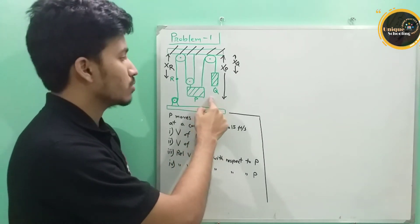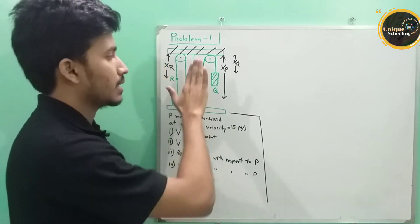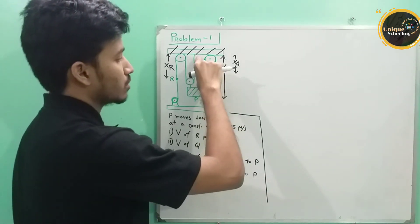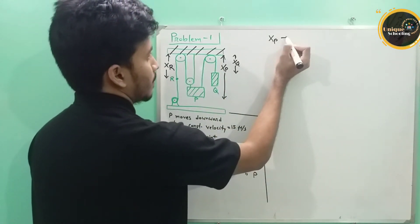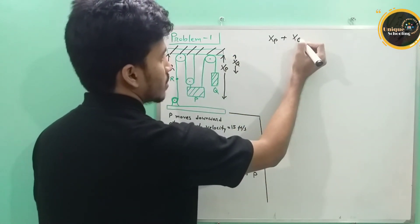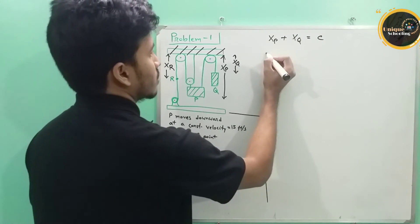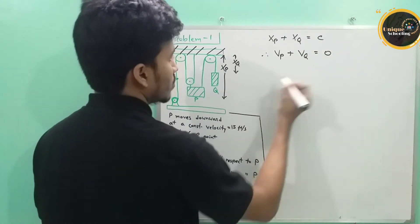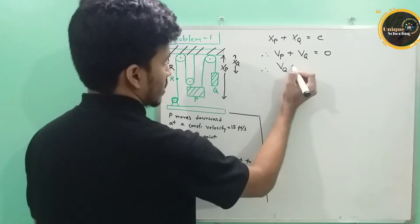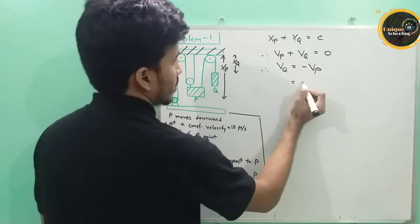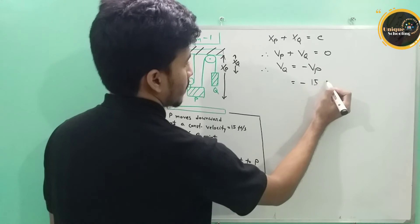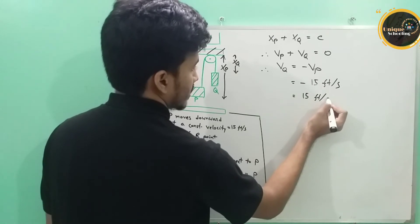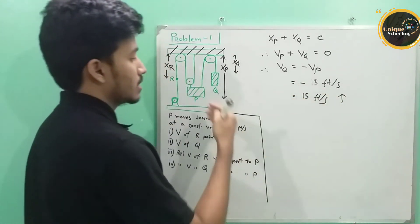I will show you a similar scenario. We have xP plus xQ equal to constant, so vQ is equal to minus vP. This gives vQ equal to minus 15 feet per second. The negative sign means the direction is upward, since downward is taken as positive.